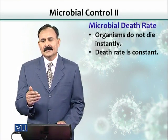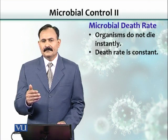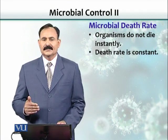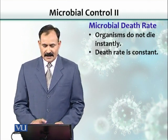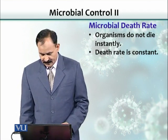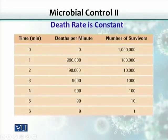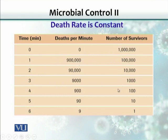There would be a gradual reduction in the number of organisms, and that is called a decimal reduction. This is data from an experiment where the x-axis shows time. Initially the organisms were a certain number of survivors. We started heating the culture, and after every minute we started counting the number that was left — a viable count.